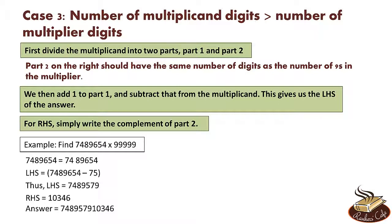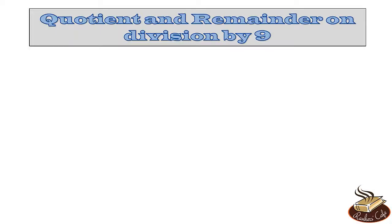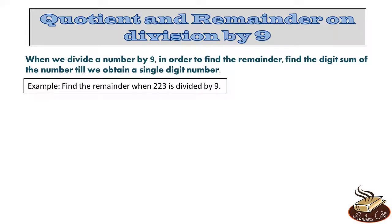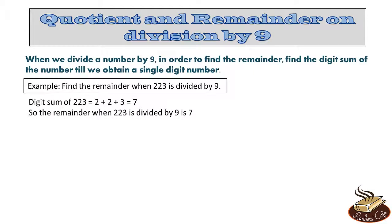So this is the process that you need to follow when you have to multiply any number with 99999 or any number which has only 9's in it. Now let's learn another very useful result. Let's learn how to find the quotient and remainder when any number is divided by 9. Now when we divide a number by 9, in order to find the remainder, what we do is we simply find the digit sum of the number till we obtain a single digit number. For example, let's say we divide 223 by 9 and we need to find the remainder. So we find the digit sum of 223. The digit sum of 223 is 2 plus 2 plus 3 which is equal to 7. So when 223 is divided by 9, we get a remainder of 7.